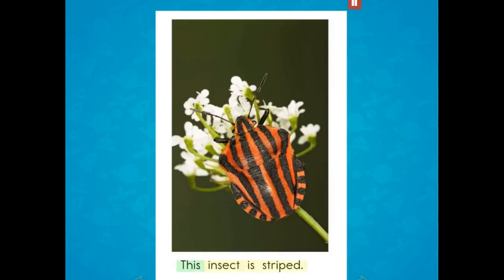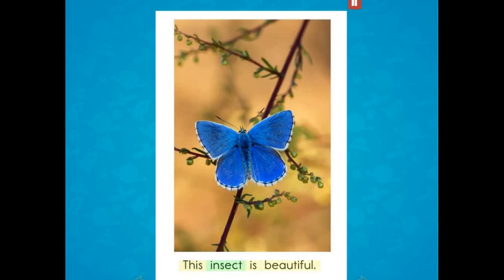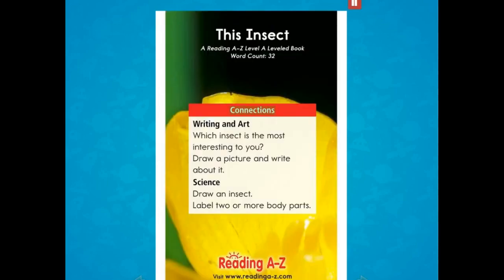This insect is striped. This insect is beautiful. Connections — Writing and Art: Which insect is the most interesting to you? Draw a picture and write about it. Science: Draw an insect and label two or more body parts.